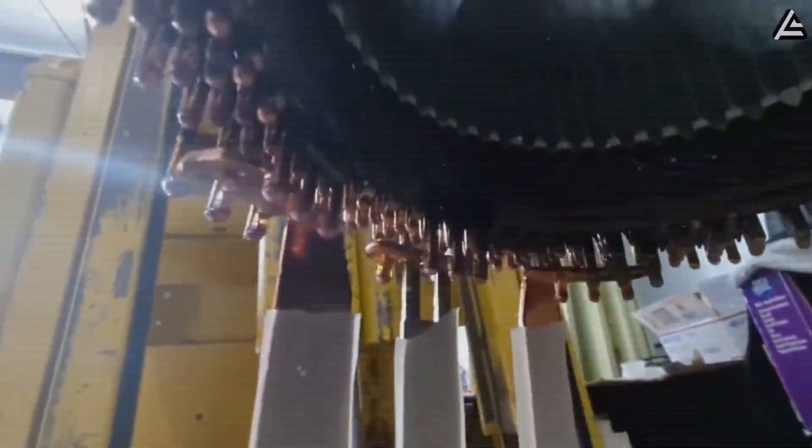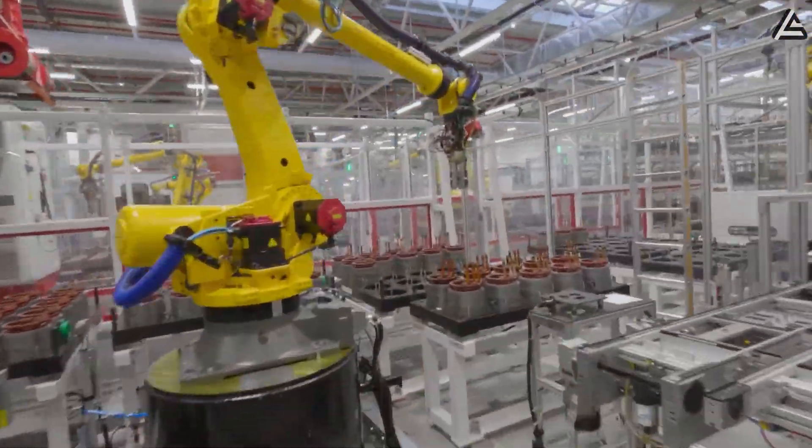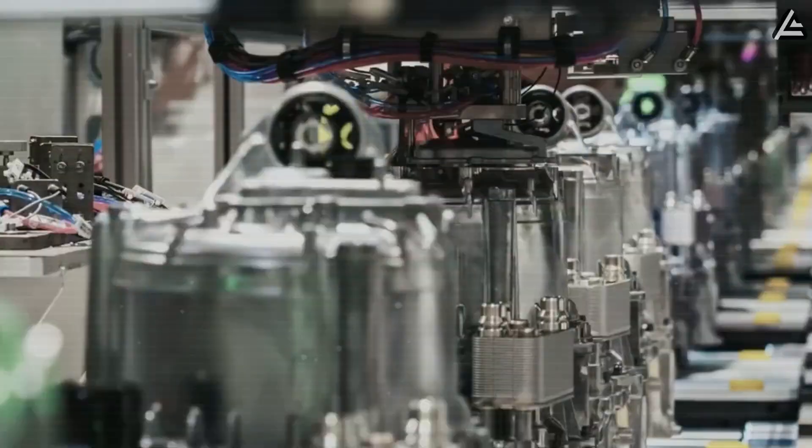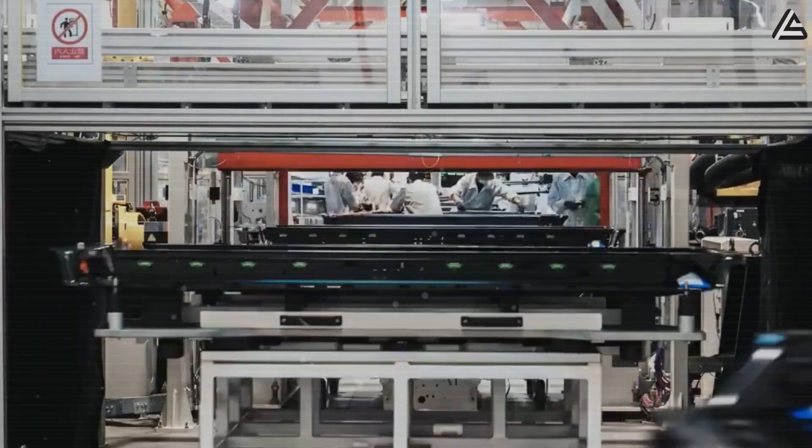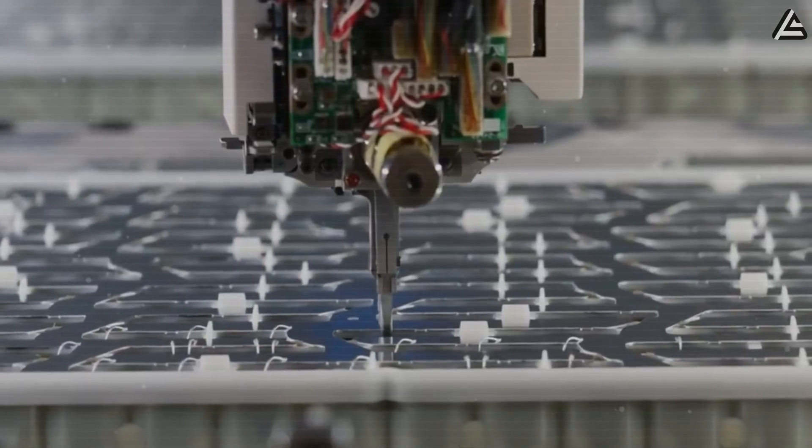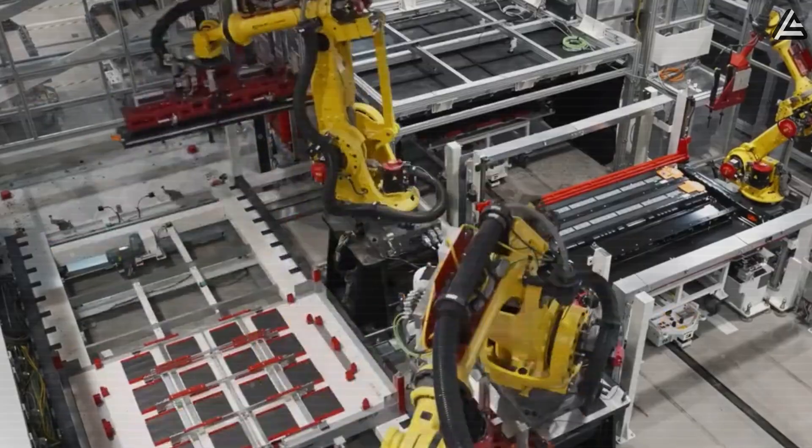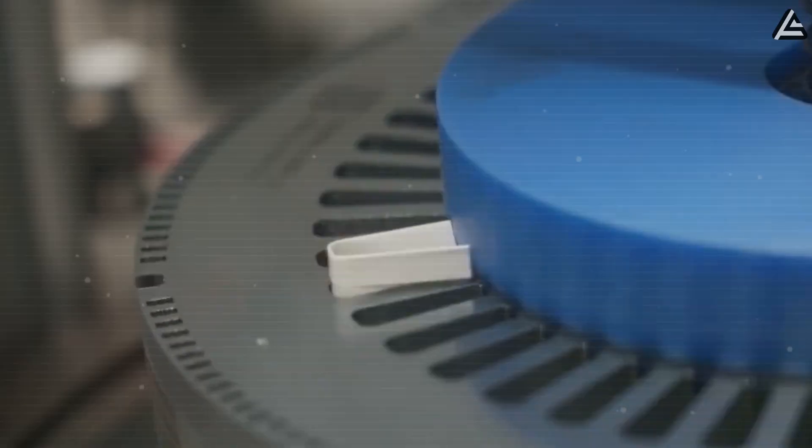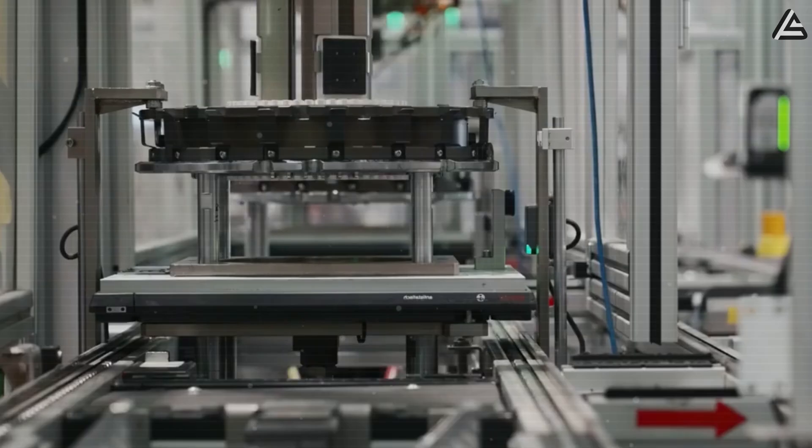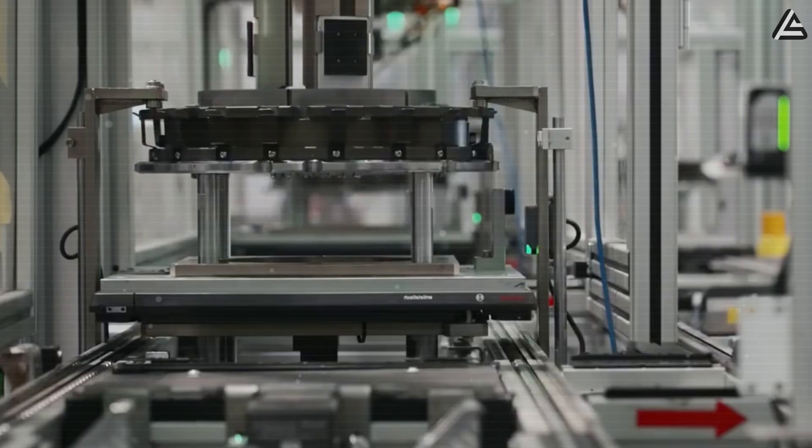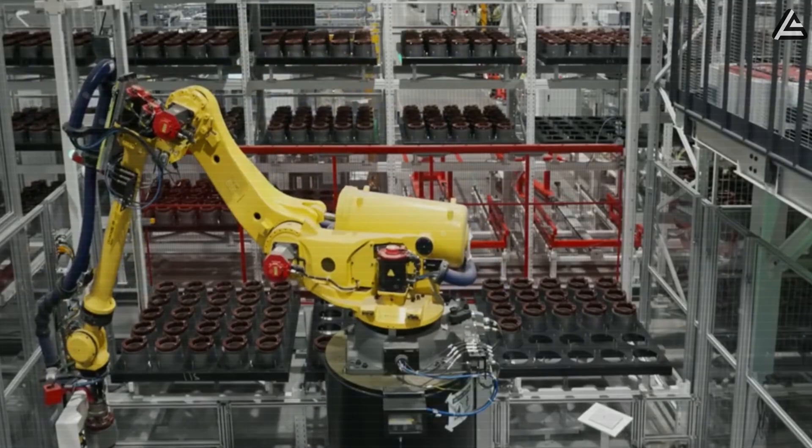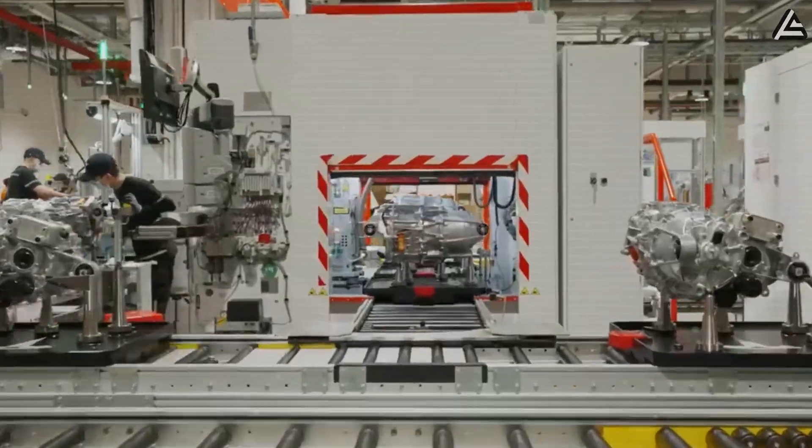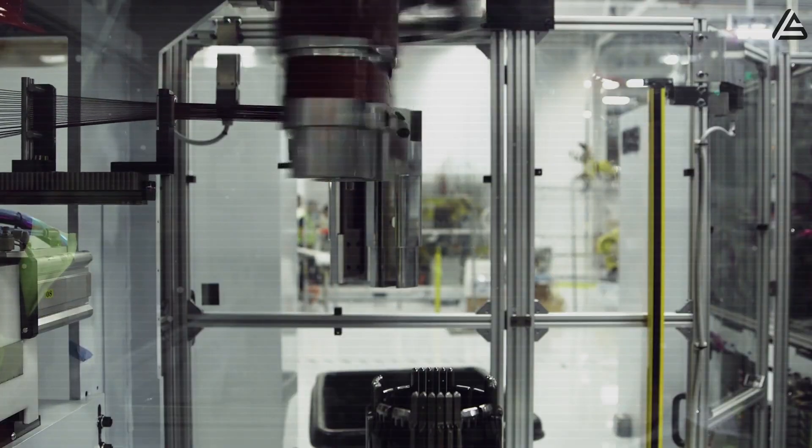Tesla's vertically integrated plants, like Giga Texas and Giga Mexico (set to start production in late 2026), are designed to exploit this advantage. With the carbon-wrapped rotor, manufacturing cost per kilowatt of output could fall from around $11 per kilowatt for current Model 3/Y motors to just $8.20 per kilowatt, marking an estimated 25 percent efficiency gain. That's a level of cost compression no legacy automaker can match.